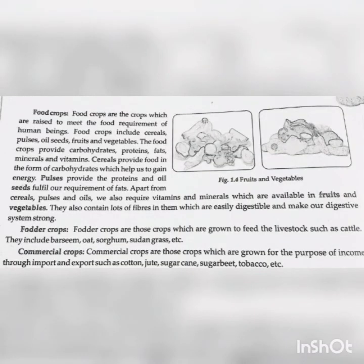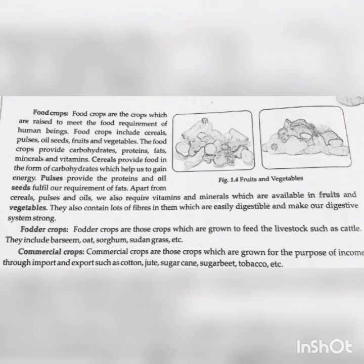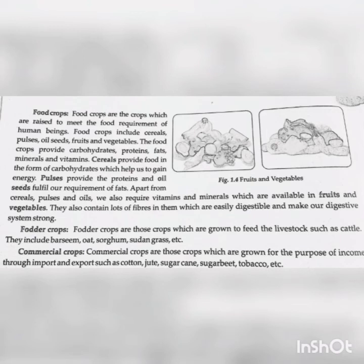Food crops are the crops which are raised to meet the food requirement of human beings. Food crops include cereals, pulses, oil seeds, fruits and vegetables. The food crops provide carbohydrates, proteins, fats, minerals and vitamins. Cereals provide food in the form of carbohydrates which help us to gain energy. Pulses provide the proteins and oil seeds fulfill our requirement of fats. Apart from cereals, pulses and oils, we also require vitamins and minerals which are available in fruits and vegetables. They also contain a lot of fiber which is easily digestible and makes our digestive system strong.